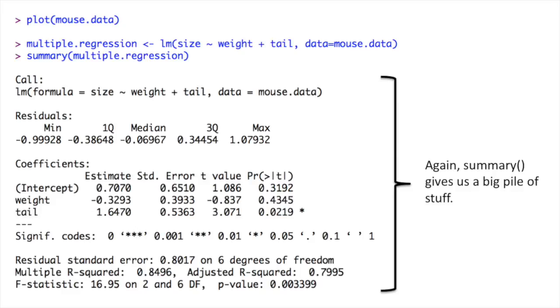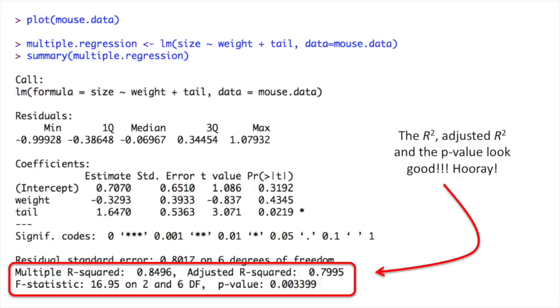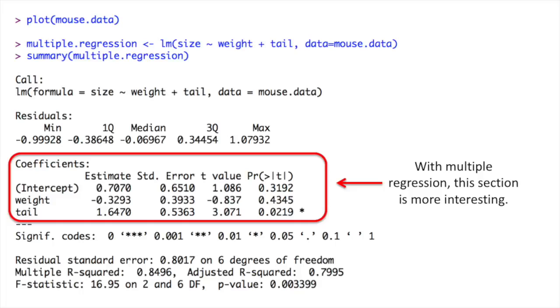Again, summary gives us a big pile of stuff. The R squared, adjusted R squared, and the P value look good. Hooray! Note, since we're doing multiple regression, we're now more interested in the adjusted R squared value.